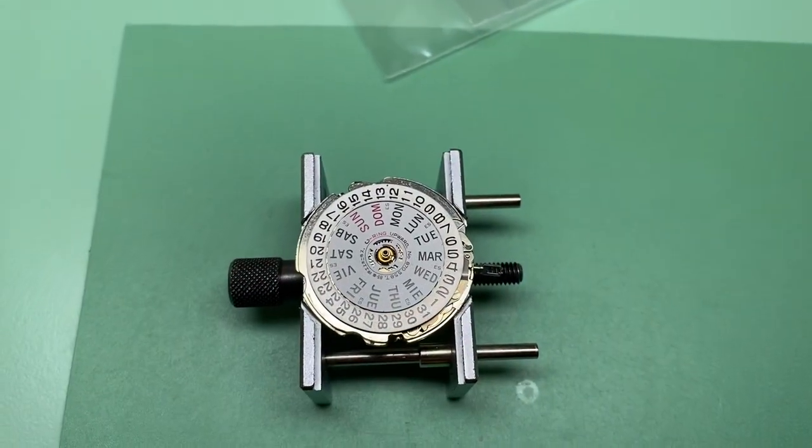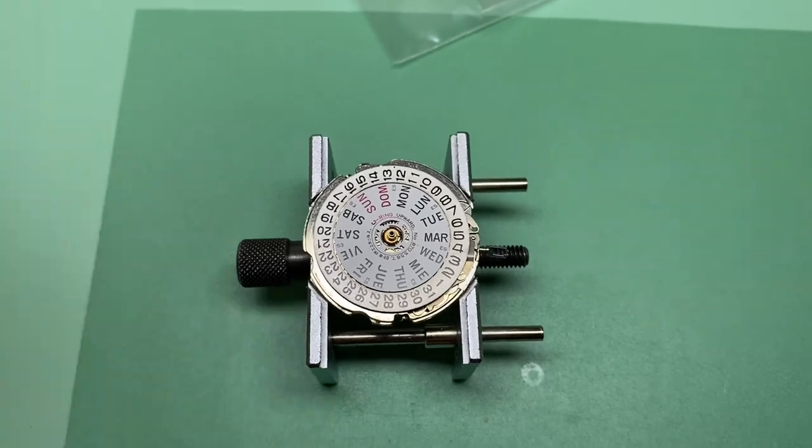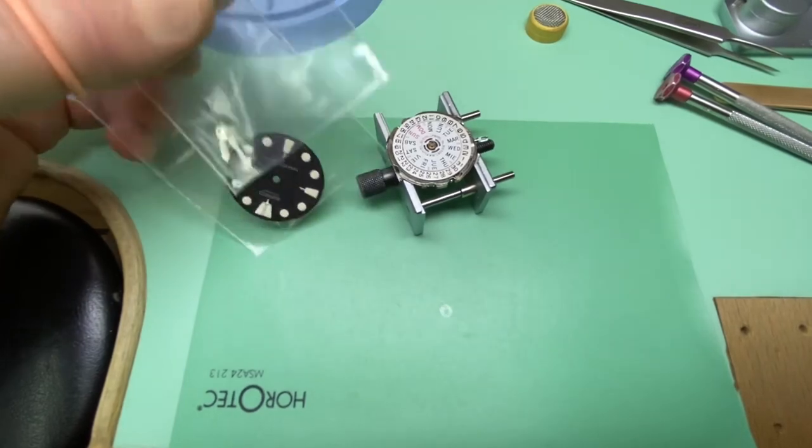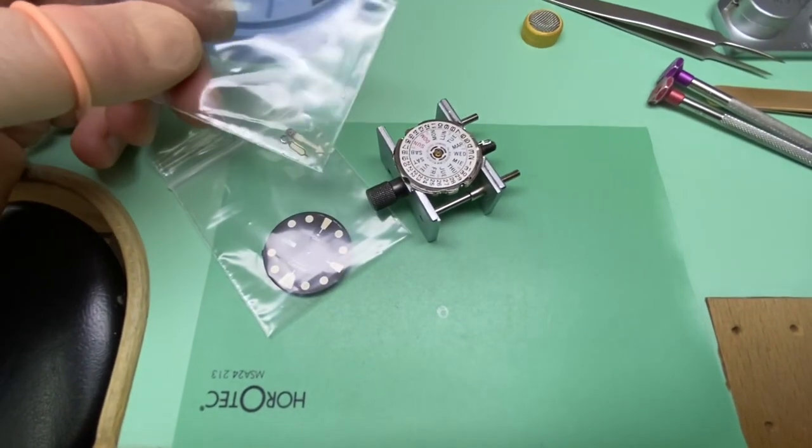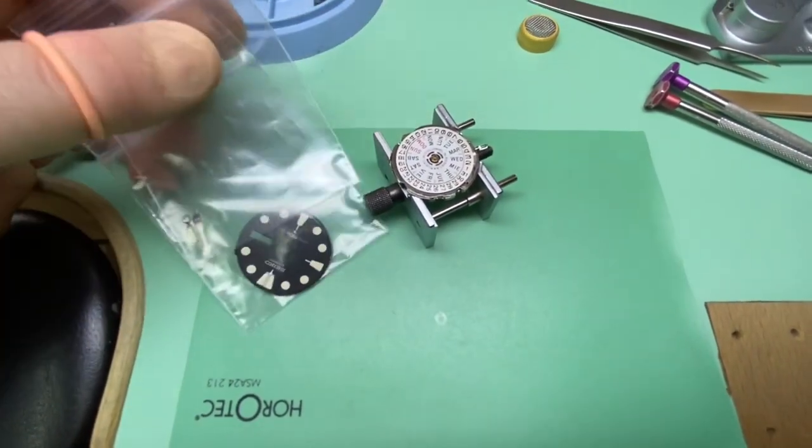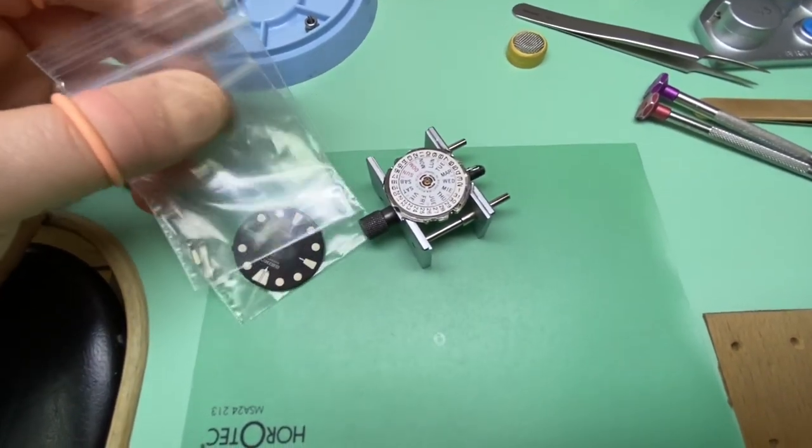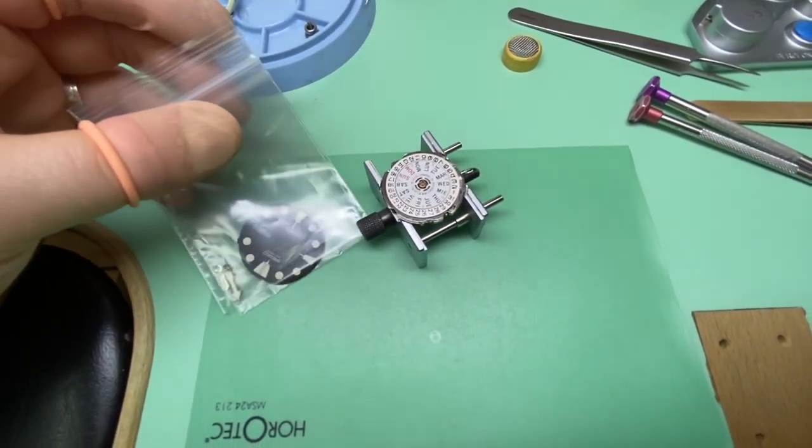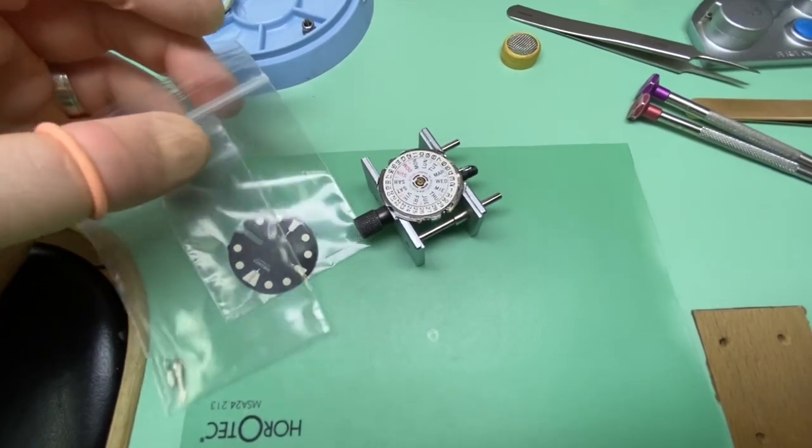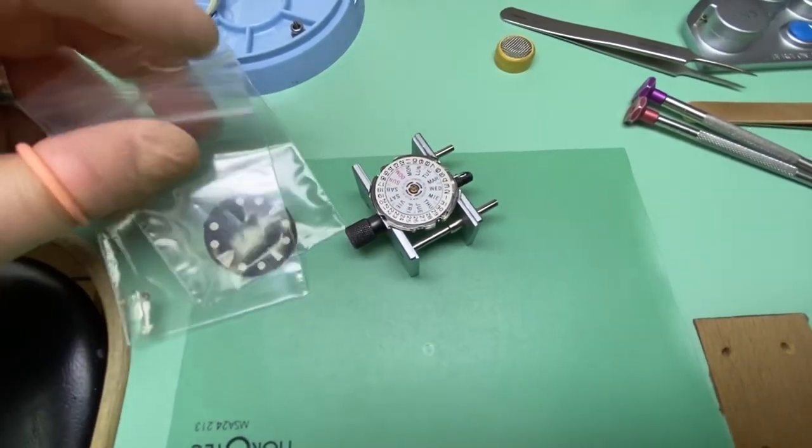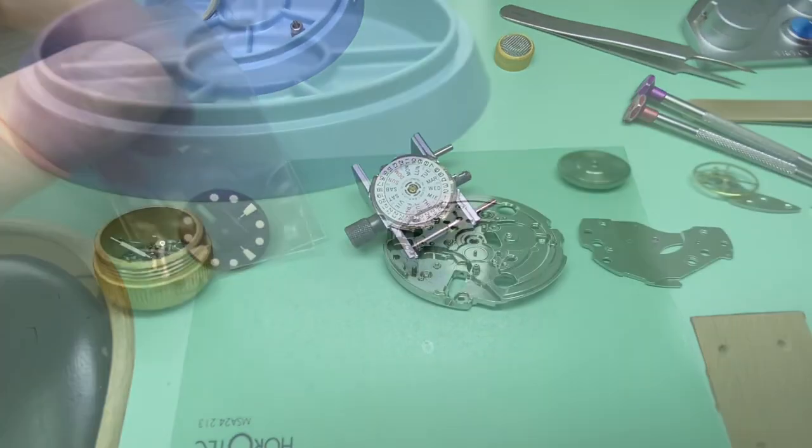Once the dial and hands are removed, we're ready to get started to dismantling the watch. We make sure that we keep the dial and hands in plastic bags separately to make sure that no further damage can happen to them. They're kept with the rest of the watch while the watch is dismantled. It's also at this point that we will completely strip the case apart, ready for cleaning.